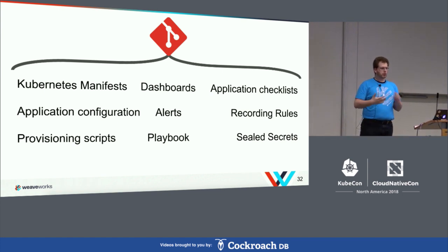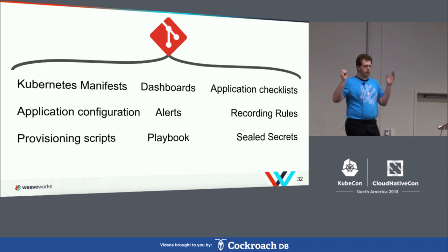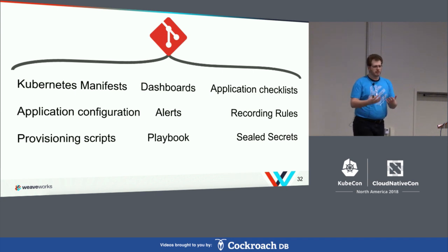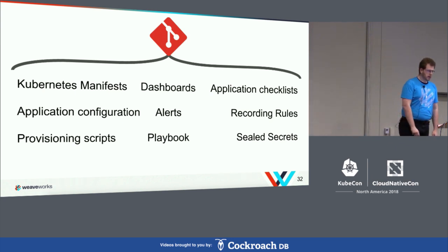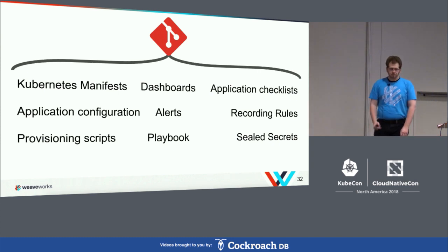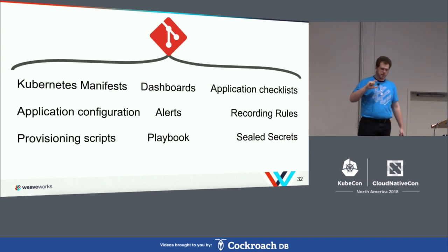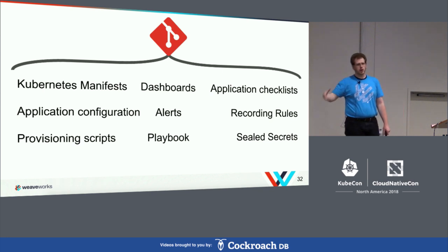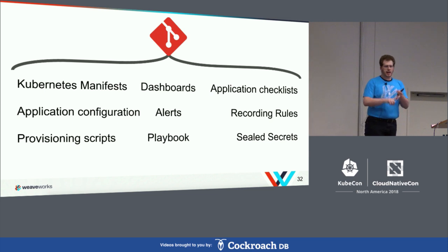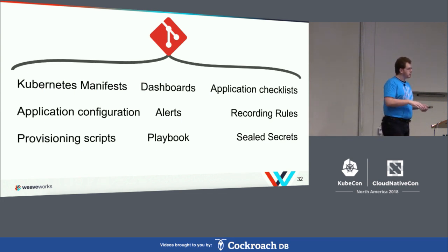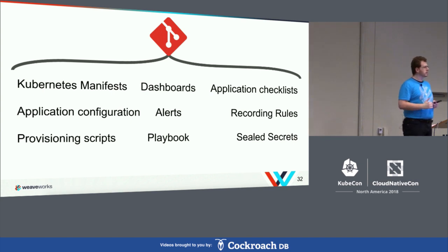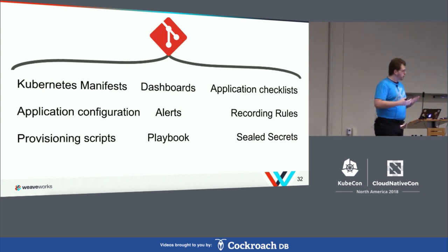Your playbooks and runbooks are what you use when you're on call. You get an alert at 3am, you look up the common failure modes and how to fix them. At Weaveworks, we encode best practices for our applications in a small YAML file and have a CI step that enforces those things are true for our services. When you release a new service, it has to have dashboards, alerts, and documentation. If it doesn't, we require an explicit exemption with a note from the person who made it.